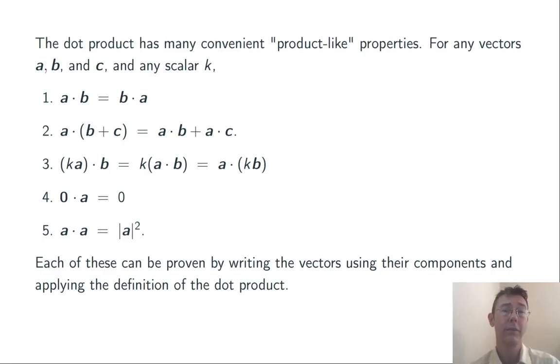Let's throw in one additional property while we're at it. If you dot a vector with itself, the scalar value you're going to get back is going to be the square of the length of that vector. This property, as well as all of the other four, can be verified just by writing out the vector using its components and then applying the definition of the dot product. They're all very short proofs.